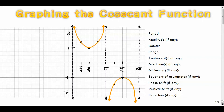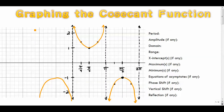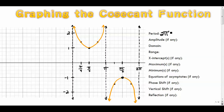One cycle includes the downward parabola-like curve and the upward one — both are included in one cycle. One cycle repeats itself after two pi units, just like sine does. The function will repeat in both directions.